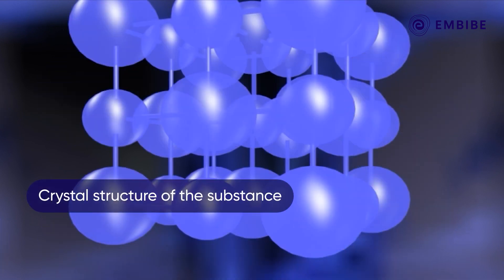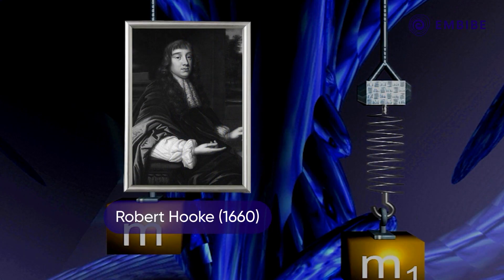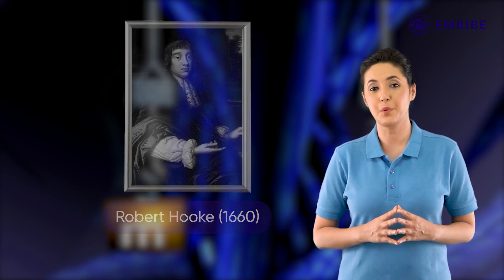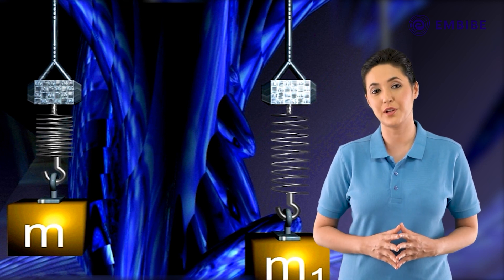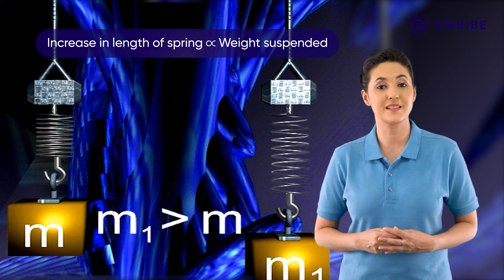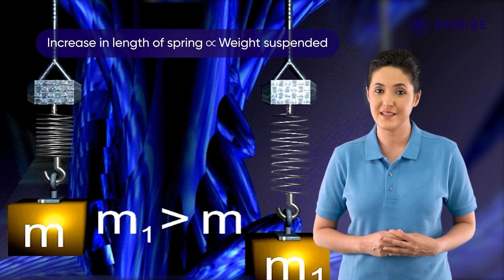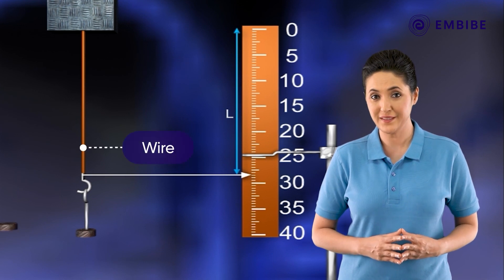A British scientist named Robert Hooke experimentally discovered that upon suspending weights on a spring-like object, the increase in its length is proportional to the weight suspended.